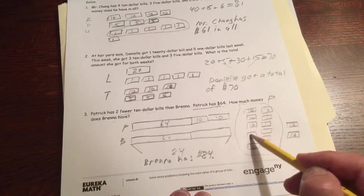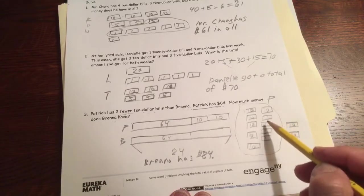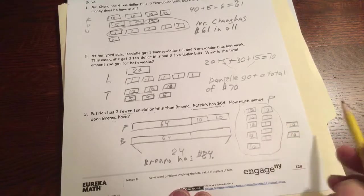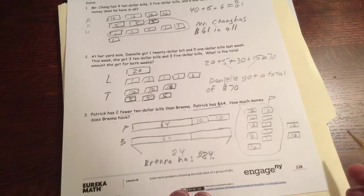And then you could just count all of it. Ten, twenty, thirty, forty, fifty, sixty, seventy, eighty, 81, 82, 83, 84. And you could have just done it like that too.